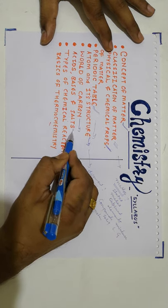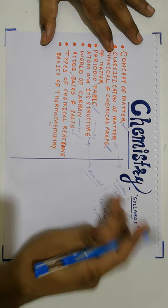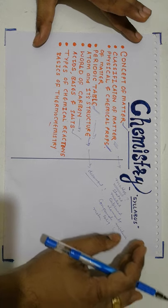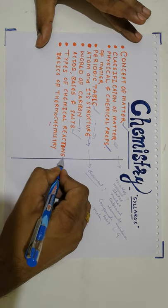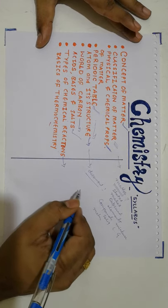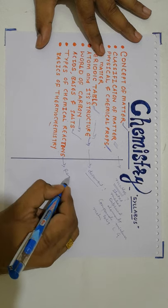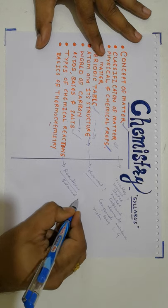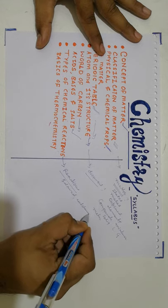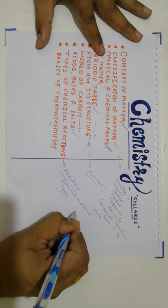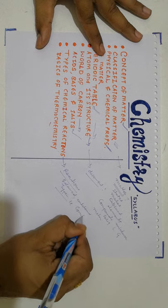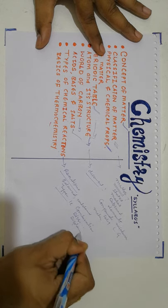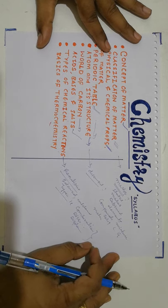After that, we will talk about acids, bases, and salts — a very basic chapter regarding the concept of acidity, basicity, and salts. After that, we will talk about types of chemical reactions. When we talk about Chemistry, we must know chemical reactions and what is called a balanced reaction, and how to create a balanced reaction from an unbalanced one. We must also know the types of reactions — what is a combination reaction, what is a dissociation reaction, and what is a displacement reaction. All these types of chemical reactions are very important to study.